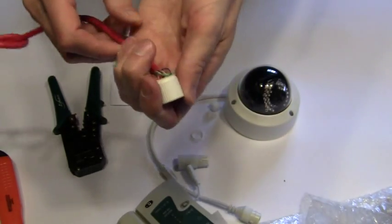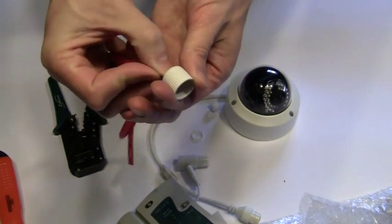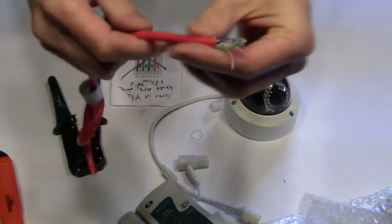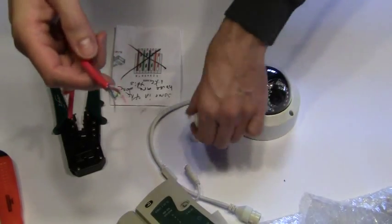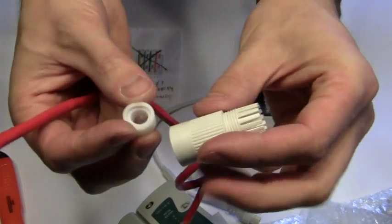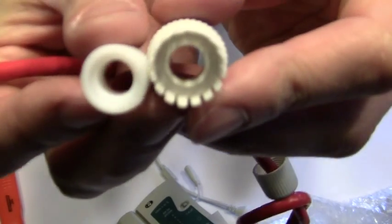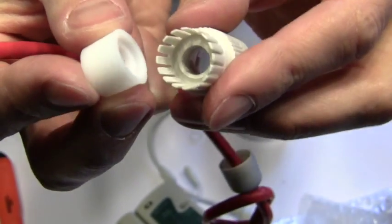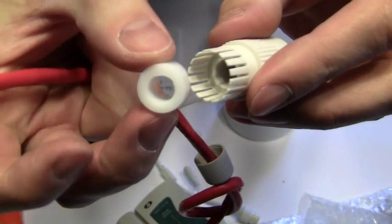But first of all, take the end cap and put that on over your Cat5 or Cat6 cable. Next you want to take this larger piece of rubber seal here, rubber grommet, and you can only really fit it one way correctly, so just make sure you put those together properly.